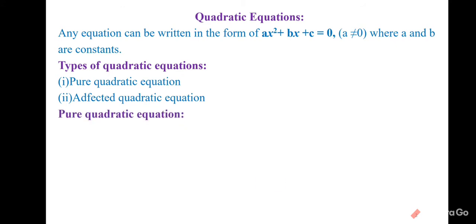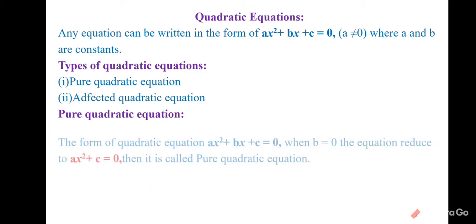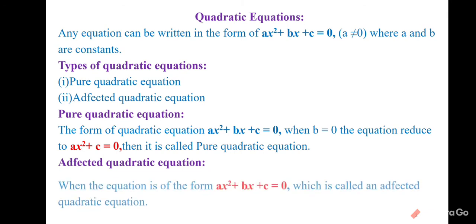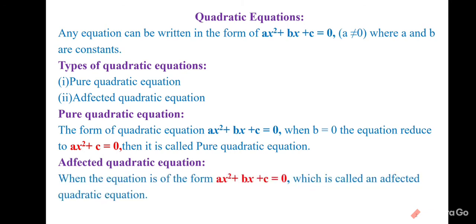Now we are going to study what is a pure quadratic equation. In the form ax² + bx + c = 0, when b = 0, the equation reduces to ax² + c = 0. This is called a pure quadratic equation. An affected quadratic equation is when the equation is of the full form ax² + bx + c = 0.